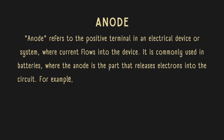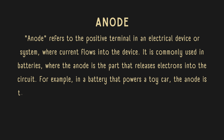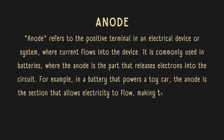For example, in a battery that powers a toy car, the anode is the section that allows electricity to flow, making the toy car move.